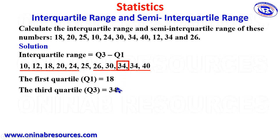So having gotten the Q3 and Q1, we go ahead to calculate our interquartile range. We set Q3 minus Q1. Our Q3 is 34, our Q1 is 18, so we have 34 minus 18 giving us 16. So that is the interquartile range of the numbers given in this problem.